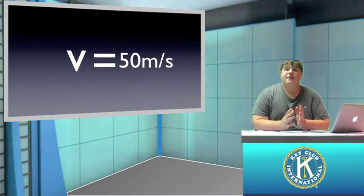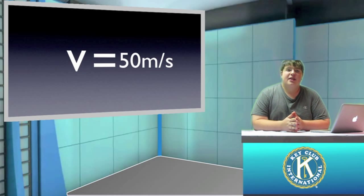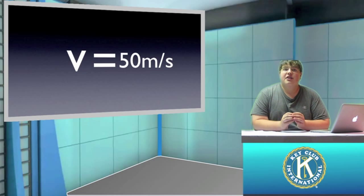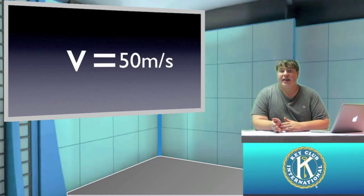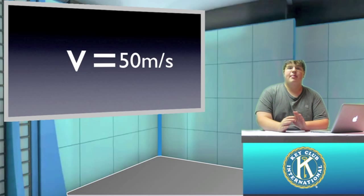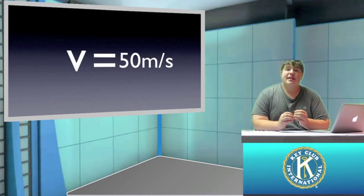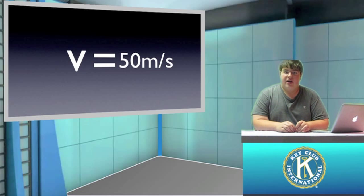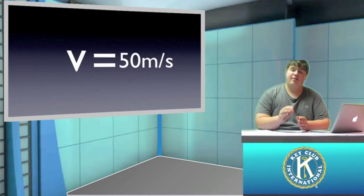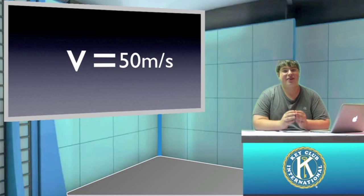So what does this 50 meters per second really mean? Basically, on average that dragster is covering 50 meters of distance every second. Now here we don't have a positive or negative, but let's say where the dragster started was the origin.